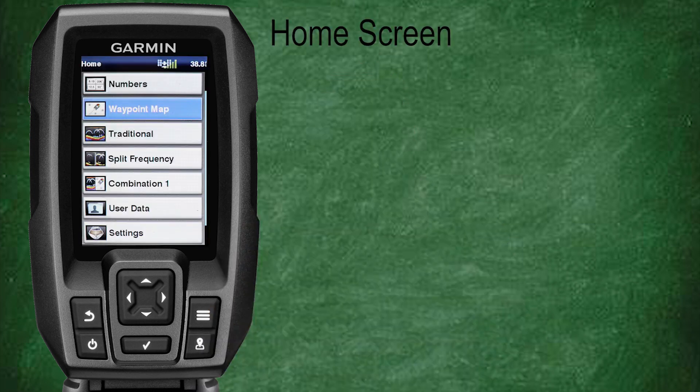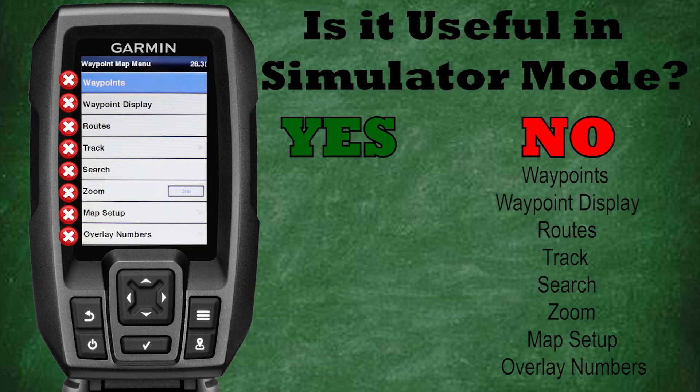Now let's look at some of the GPS functions and whether they're useful in simulator mode. In my opinion, simulator mode while functional for some GPS features is generally not that helpful — and sometimes downright frustrating to use. That's because the GPS and mapping functions are kind of stand-alone in the unit itself, which is why GPS will function anywhere without having to run simulation mode. From the home screen, selecting waypoint map and pressing the menu key gives access to waypoints, waypoint display, routes, tracks, search, zoom, map setup, and overlay numbers — all accessible in simulation mode, but not required, as they can be accessed just as easily without entering simulation mode.